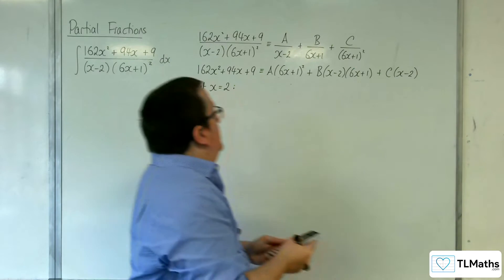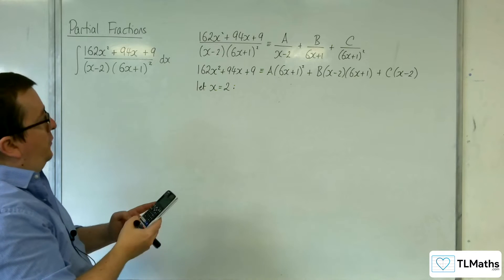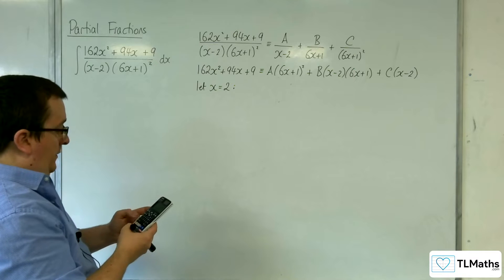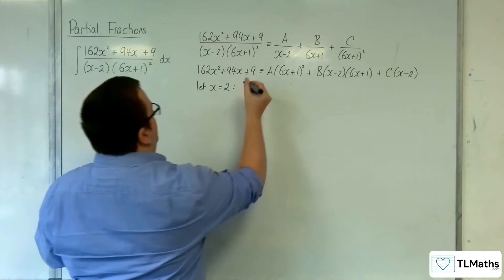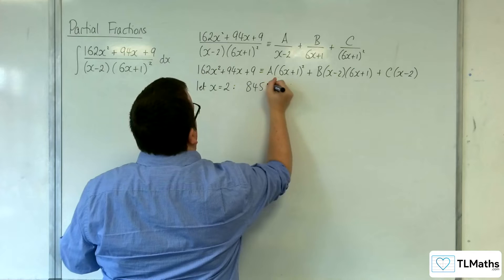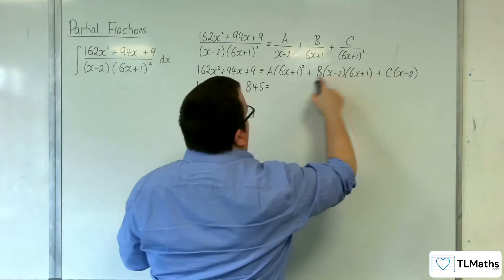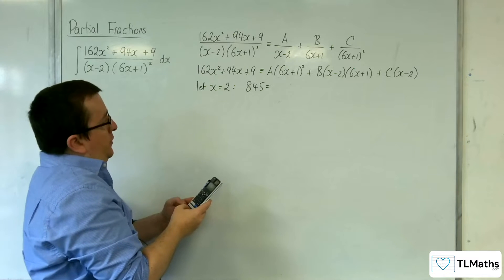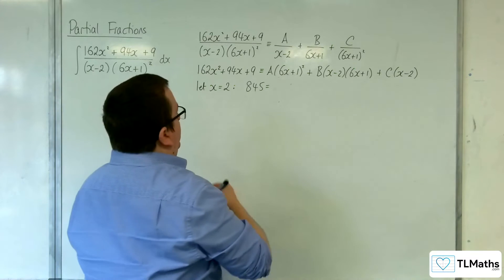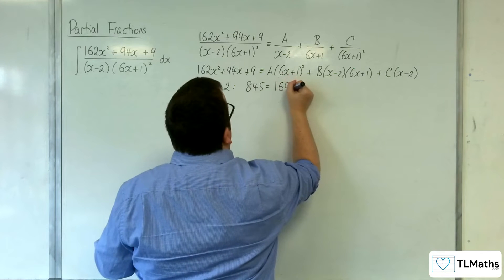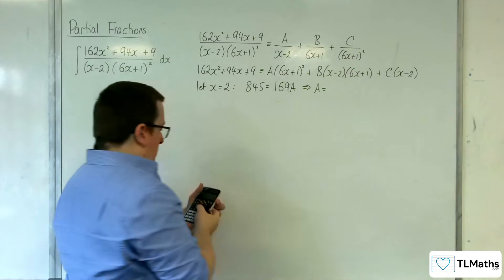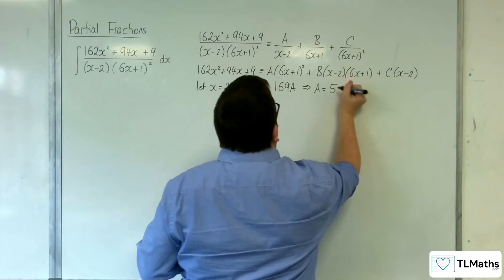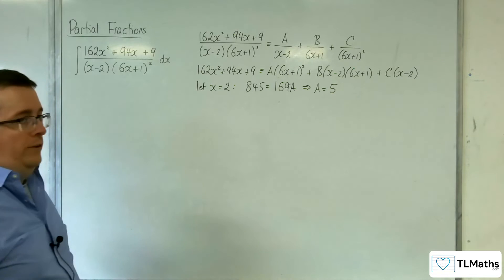Substituting x = 2: on the left hand side we get 162 times 2 squared plus 94 lots of 2 plus 9, which equals 845. With x = 2, that knocks out the B and C brackets, leaving just A times (6 times 2 plus 1) squared, which is 169A. So 845 divided by 169 gives us A equals 5.